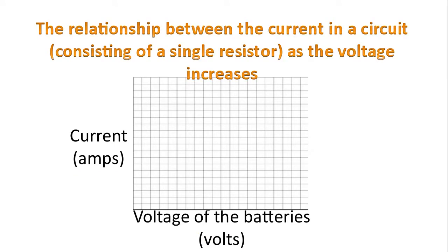Notice how detailed the title is. The relationship between the current in a circuit consisting of a single resistor as the voltage increases. The title should have the independent variable in it. The title should also include the dependent variable in it. And the title should include any other details that are important for this experiment. In this case a single resistor.